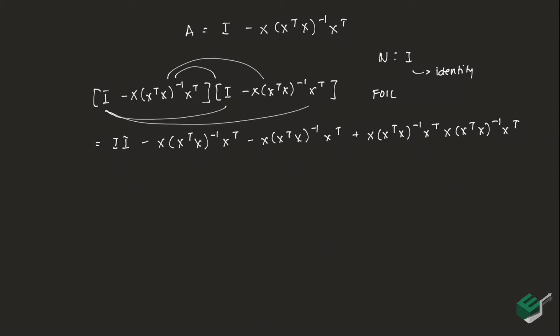Note that this form is the same as this form, it's just that this form is inverted. Now by rules of matrix inversion, if we multiply an inverse by the original, we just merely cancel out. So what we're left with is I times I minus X times X transpose X inverse X transpose minus X times X transpose X inverse X transpose plus X times X transpose X inverse X transpose.